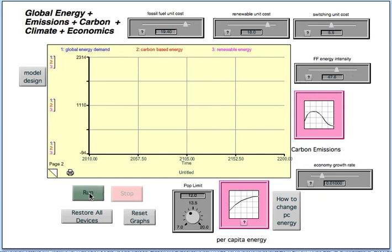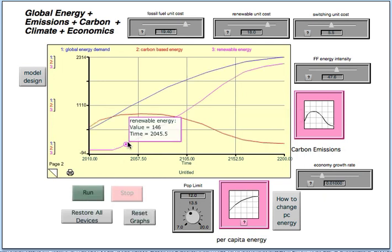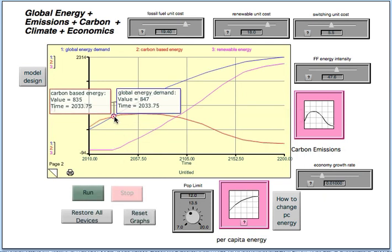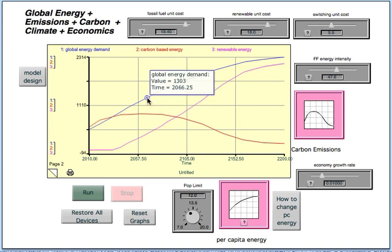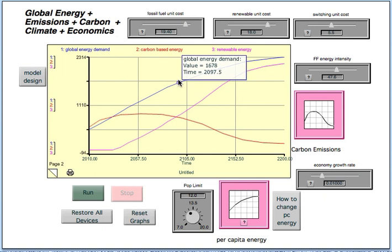If you run the model, it'll calculate the amount of energy you get. That's this red curve here in exajoules of energy produced by burning fossil fuels. The blue line is actually the global energy demand, which comes from the population and the per capita energy demand.